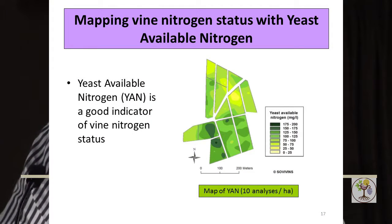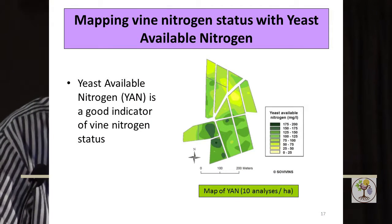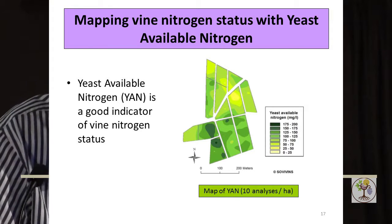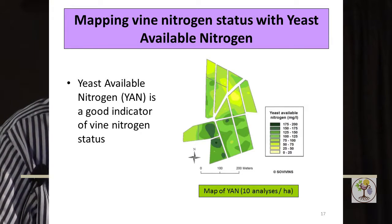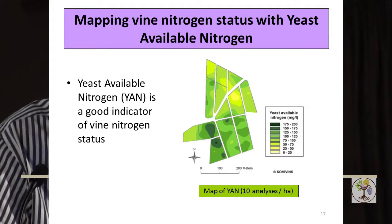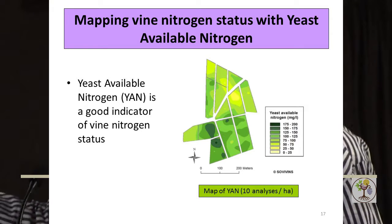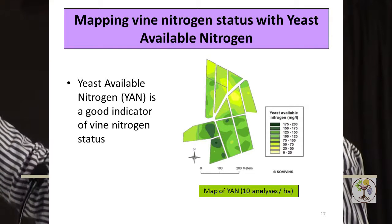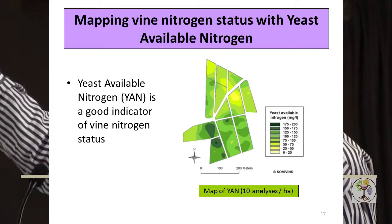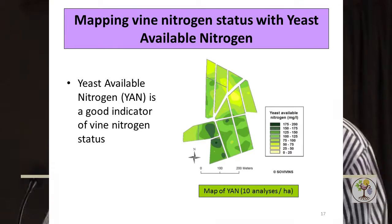You can do the same thing with the nitrogen status of the vine. From the same sample, you send a fraction of the grape juice to a lab doing 13C analysis, and another part to a regular enology lab to have the yeast available nitrogen measured — the yeast available nitrogen is a very good indicator of vine nitrogen status. Then you get very nice intra-block variability of nitrogen status: parts of the vineyards which are low in nitrogen and other parts which are high. So we can map vine nitrogen status today also at a very high resolution.